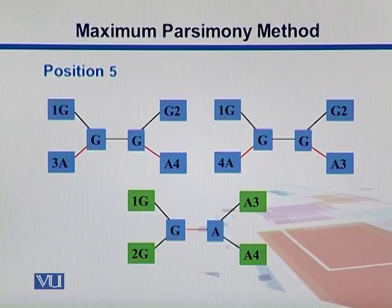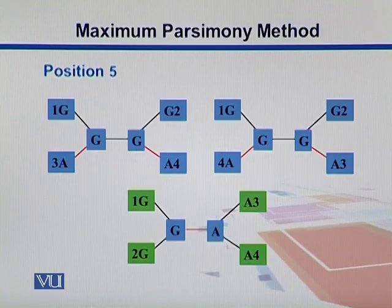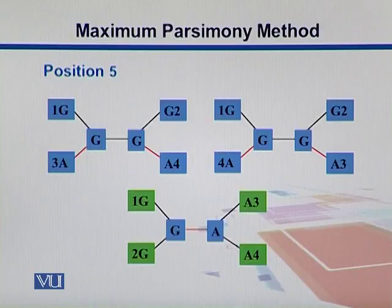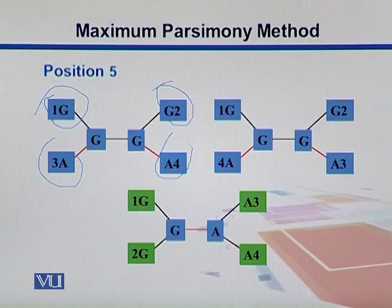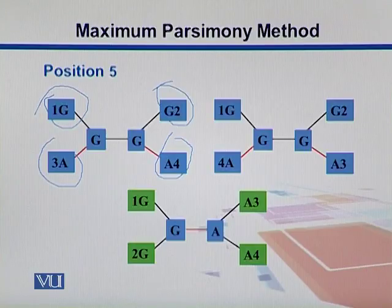Taking column five, we construct possible trees. Since we have four sequences or four leaves, we can have three different possible unrooted trees after removing duplicates. In the top left tree, sequence one has G, sequence two has G, sequence three has A, and sequence four has A. Black lines represent matches and red lines represent substitutions. In this first tree, there are two substitutions — one where A changes to G, and another one.